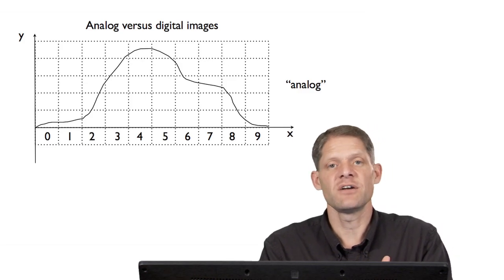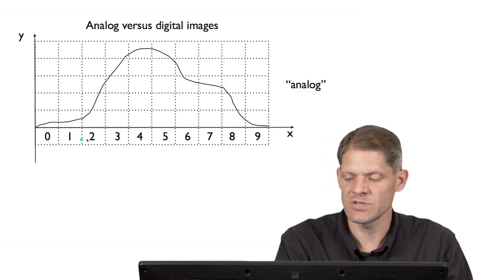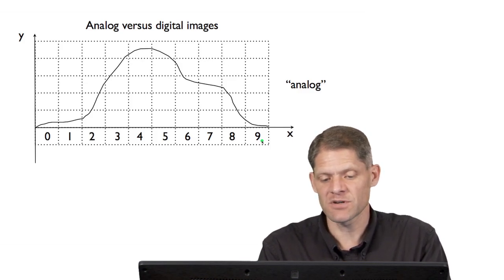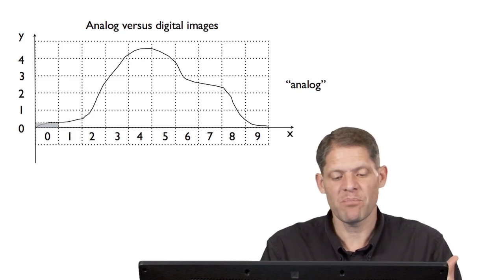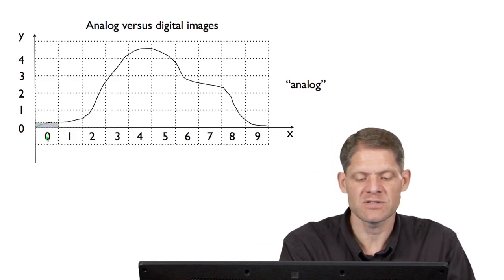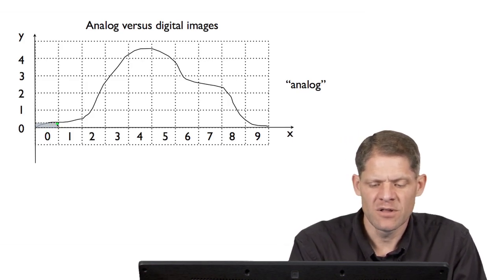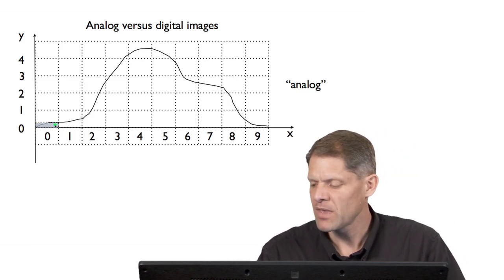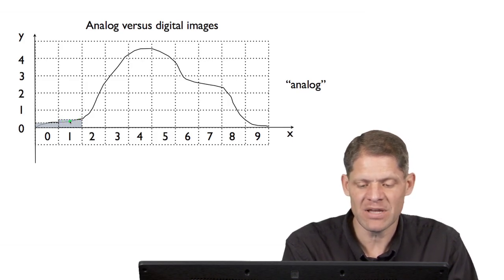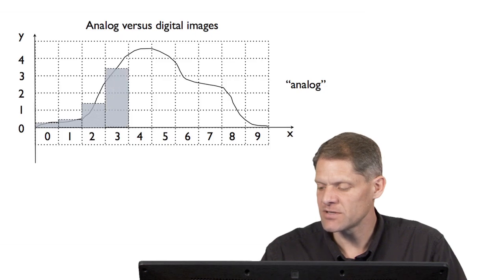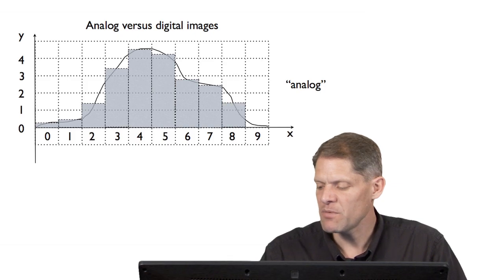We can imagine that our detector has a series of pixels — here I've numbered them from 0 to 10. Say it's a CCD camera with 10 pixels across. What we record is we sample the analog signal in each pixel and give it a discrete value. For instance, in this pixel, the average value of the signal across that pixel is something like 0.3. We go to the next pixel, find the average value of the function in that pixel, assign it that value, and so on. We sample the function at each of these different pixels and build up a quantized, digital image.